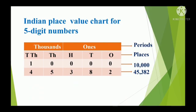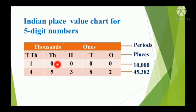Indian place value chart for 5-digit numbers. Students, a place value chart is used for reading and writing numbers. A place value chart has been divided into 2 periods — the 1s period and the 1,000s period. It makes it easy to read and write large numbers. The 1s period consists of 3 places: 1s, 10s, 100s. The 1,000s period consists of 2 places: 1,000s and 10,000s.